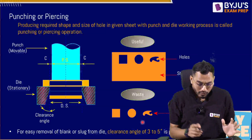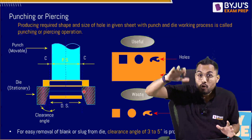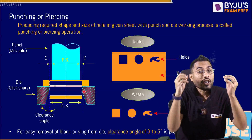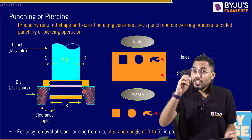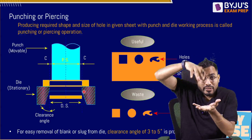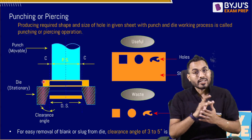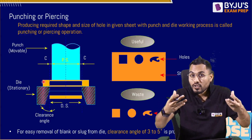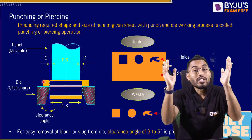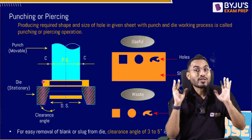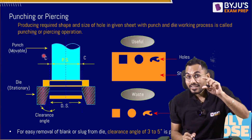This operation is performed with the help of a punch and die combination. The die is kept stationary, the punch is kept movable, and the punch applies the required force for shear fracture to take place. The shear fracture occurs by penetrating the punch in the thickness direction of the sheet. To allow the punch to penetrate, the size of the punch is always kept less than the size of the die. The distance by which the punch size is less than the die is called clearance.